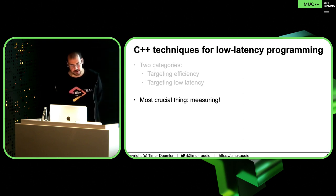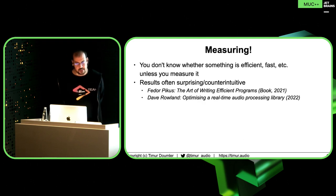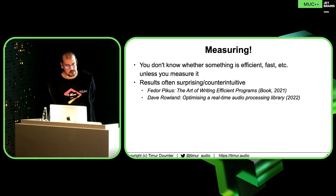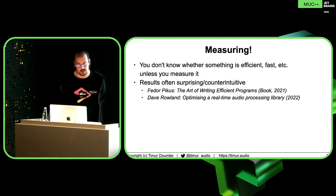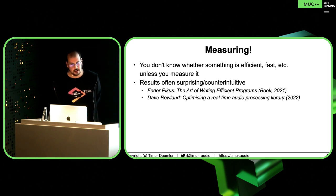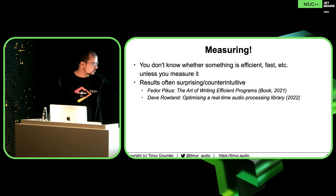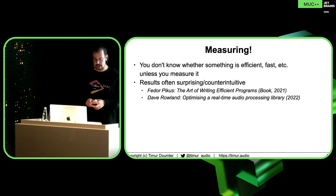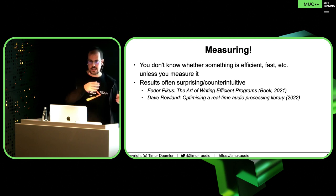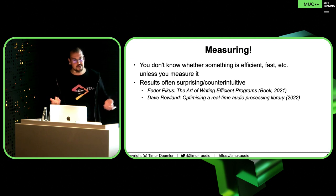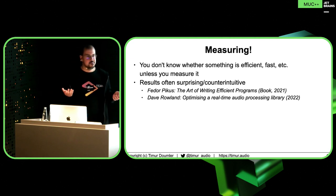This is often very surprising and counterintuitive. There is this book by Fedor Pikus, which is not about low latency specifically but is about efficiency overall and is relevant. He has some interesting examples of code where you do something and clearly it's doing less work, but for some reason it's slower. There was another talk at the Audio Developer Conference this year by Dave Rowland, who had a great example where you can compute the minimum or maximum of a range, but std::minmax that computes both at the same time turned out in some compilers to actually be slower. Completely counterintuitive — you need to measure.